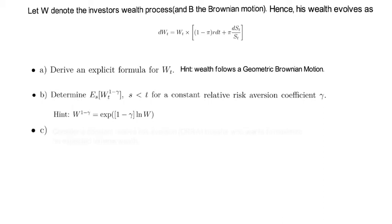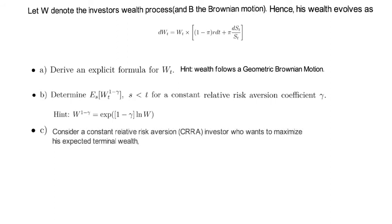Task C. Consider a constant relative risk aversion investor who wants to maximize his expected terminal wealth. Mathematically it means he wants to maximize the expectation of 1 divided by 1-γ times Wt to the power of 1-γ.